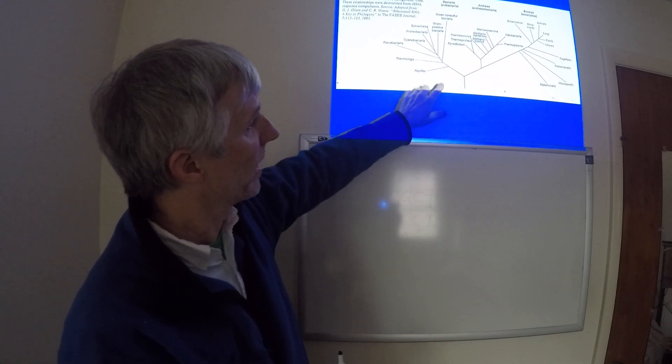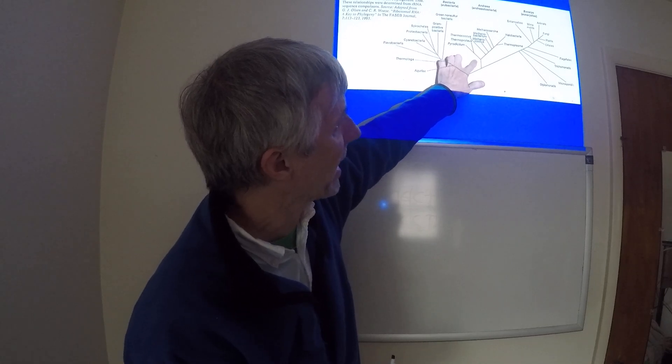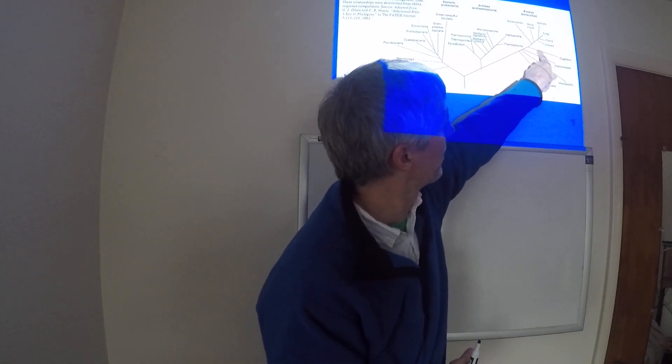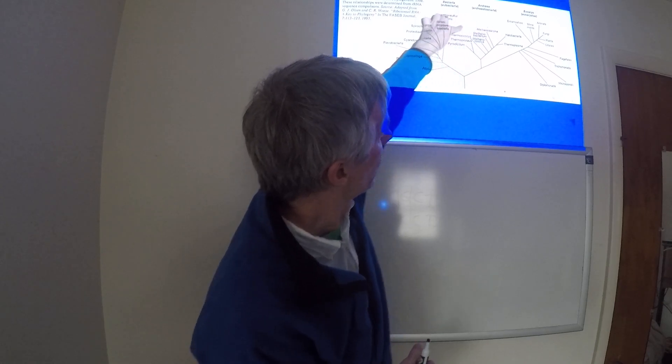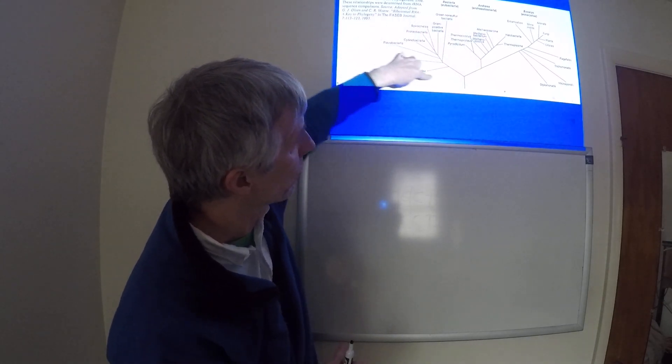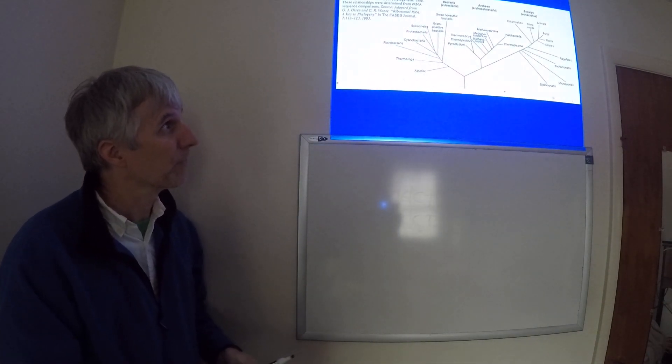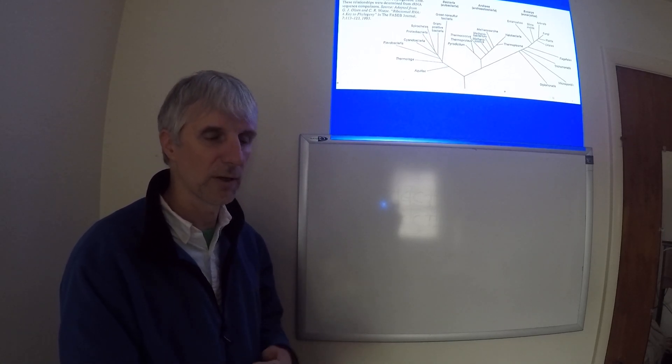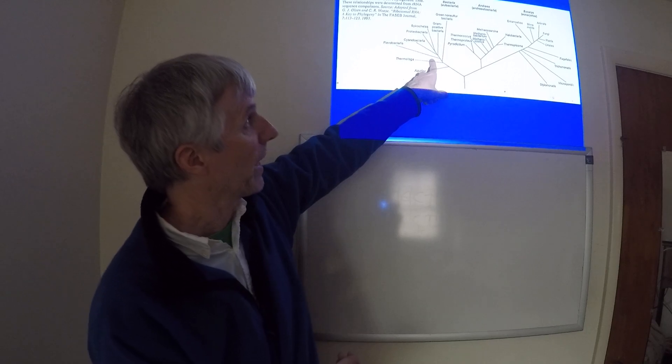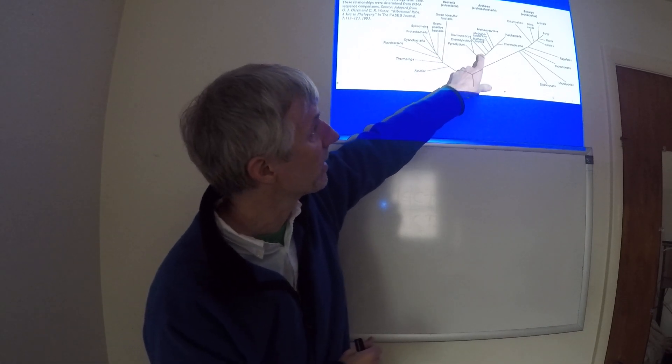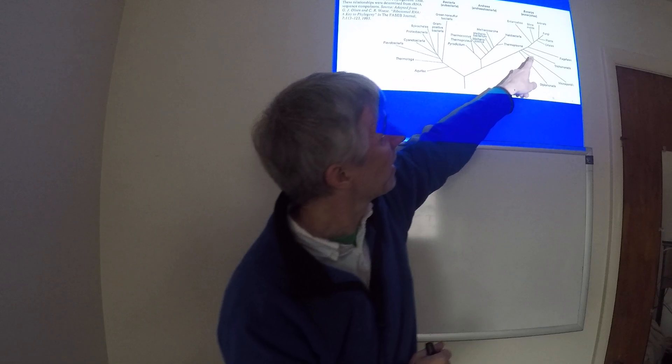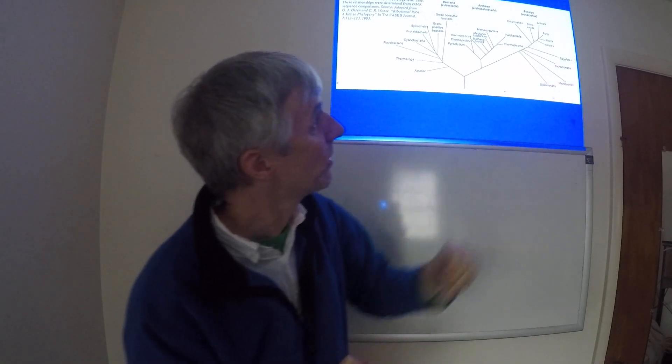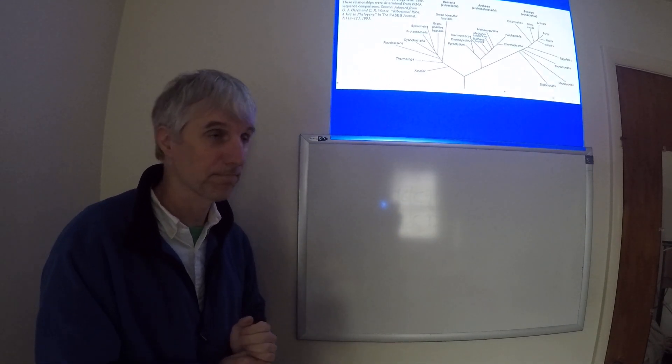But notice that there are kind of three main groups here. There's this group of species here, a group of species here, and a group of species here. This led to the modern conception of domains. Domain eubacteria, or domain bacteria, domain archaea, and domain eukarya.